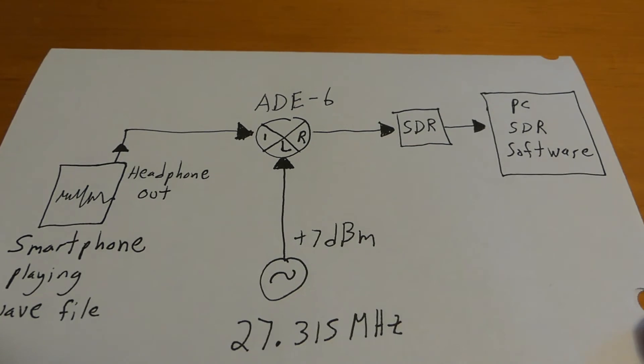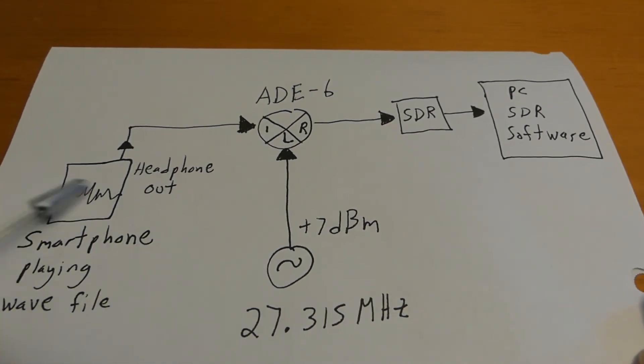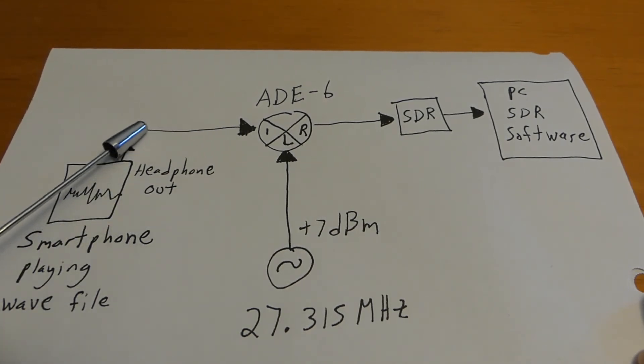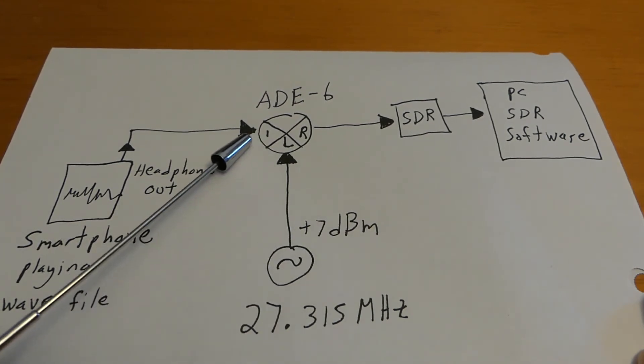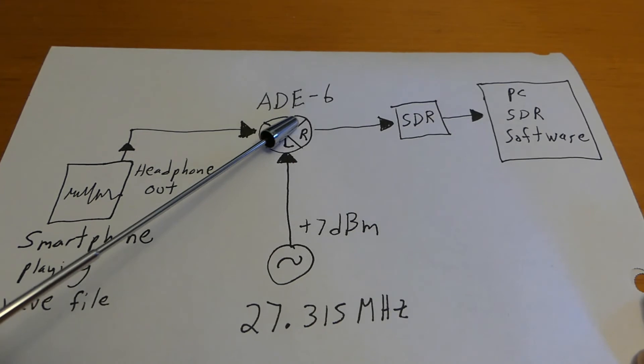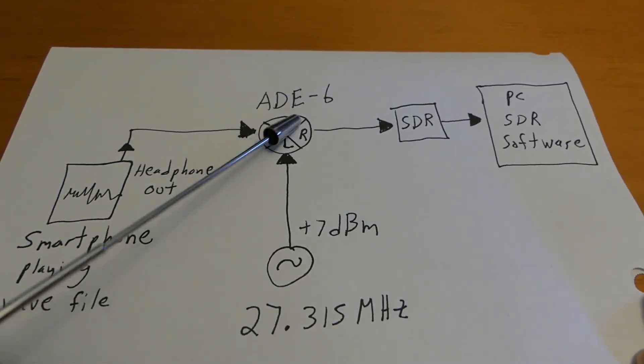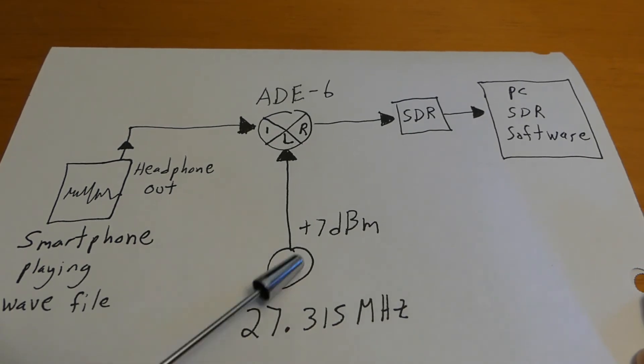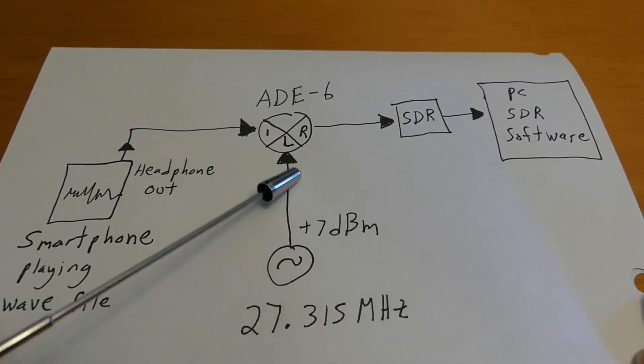Now to test things here and just prove that we're working, this will be our setup in the lab. I'll have my smartphone here playing the wave file and I'll be taking the headphone out, just left or right doesn't matter which one you pick, and I'll be plugging that into the I port of the mixer. Using the Alpha Delta Echo dash 6 mixer there, you can pick this up on Amazon for about 20 bucks.